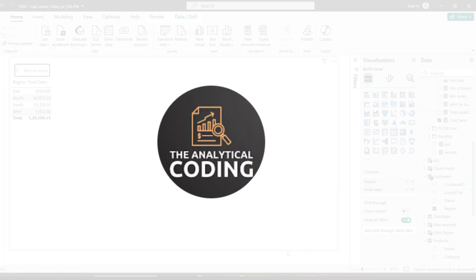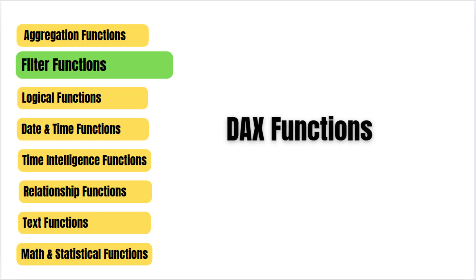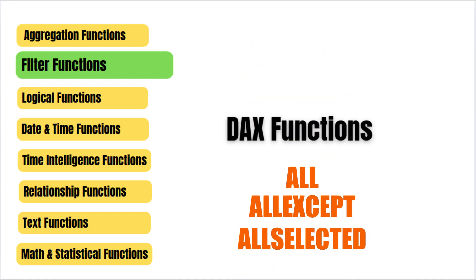Hey everyone, welcome back to Analytical Coding, your go-to channel for mastering Power BI. In today's video we are going to break down three powerful DAX filter functions: ALL, ALLEXCEPT, and ALLSELECTED. These are especially useful when working with totals, percentages, or when we want to control filter behavior in our visuals. Let us get started.